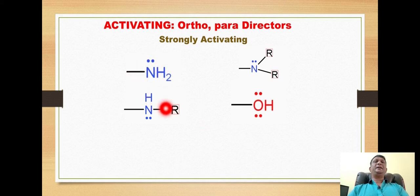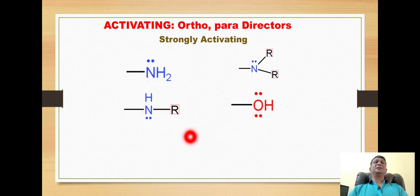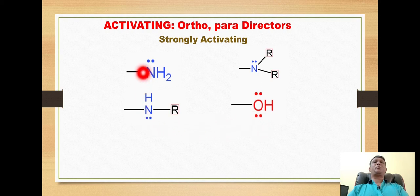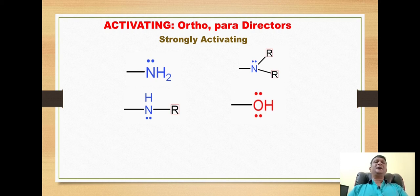All these groups have electronegative elements like nitrogen and oxygen, which carry electron pairs. These groups share their electron pairs with the aromatic ring, thus increasing the electron density over the aromatic ring. Due to this, electrophiles find electrons on the aromatic ring at a higher density, and that's why the reaction proceeds faster.